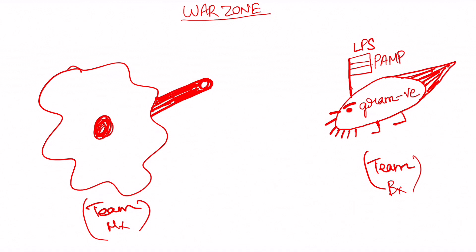Let me name this telescope as PRR — pattern recognition receptor. We also have many types of PRRs, but for my example I'm going to use TLR4, called toll-like receptor 4. We also have another type called NOD receptors or NOD-like receptors. Macrophages also have CD14 on their surface. The gram-negative bacteria holding its flag charges toward the macrophage, and after looking through the TLR4 telescope, the macrophage sends a transcription signal to the nucleus, and NF-κB is formed.